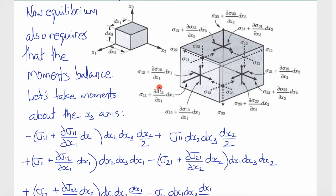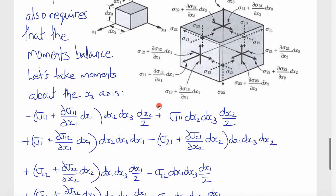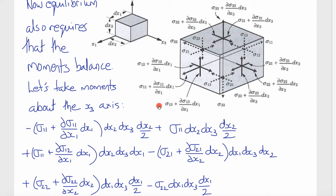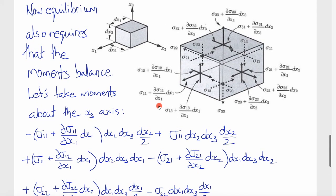Now, equilibrium also requires that the moments balance. So in the same way, we can take moments about three axes and derive three moment balance equations. If, for example, we start by taking moments about the x3 axis, then we can ignore any forces that act through that origin and calculate the contribution of the remaining tractions to moments about x3.